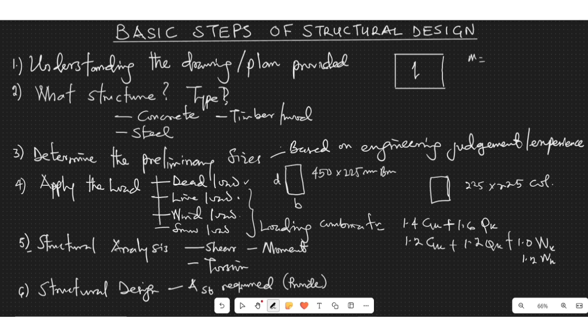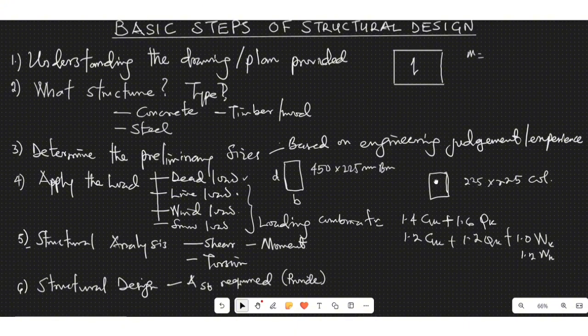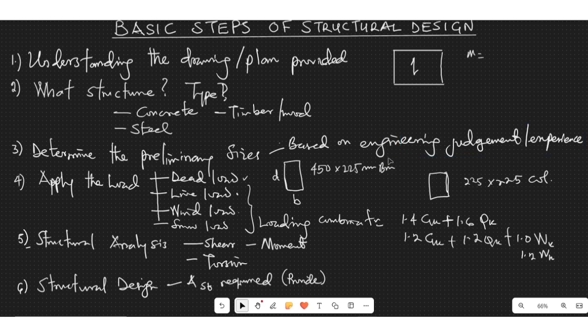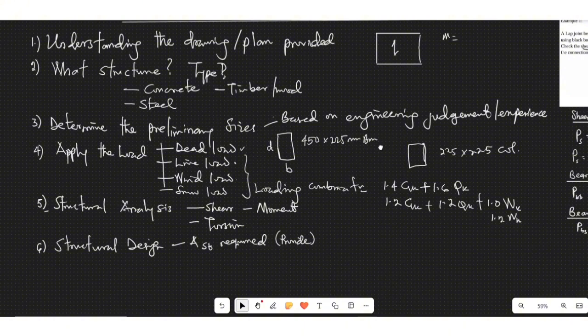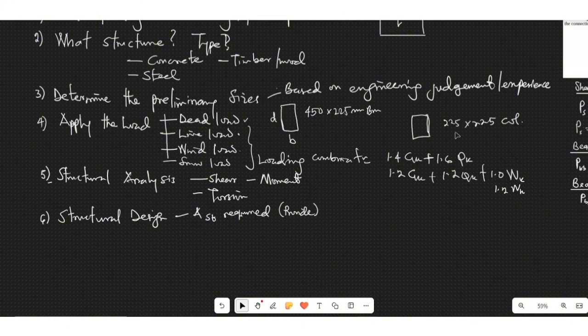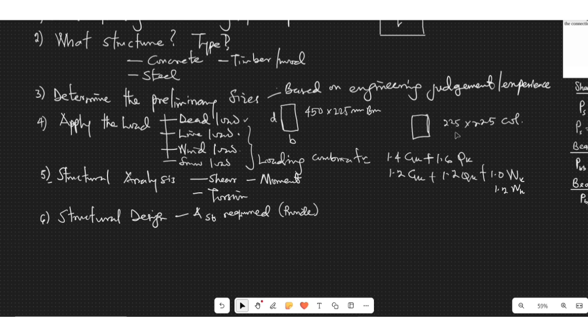So the next thing to do is to check for deflections. So after you might have done your structural design is to just carry out some necessary checks that are required. Let me just put it somewhere here so that you can have it all together. So the next one, like I said, is to check for allowable limits.